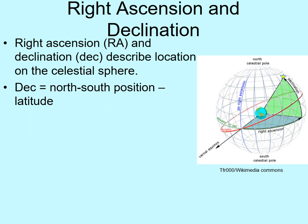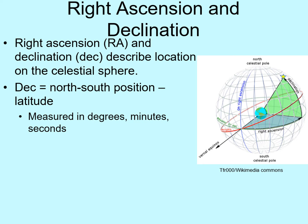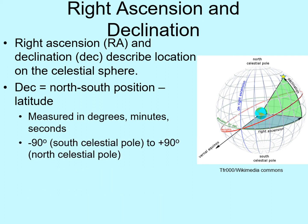Declination is like latitude on the Earth. It defines how far north or south an object appears in the sky. Just like latitude, declination is measured in degrees, minutes, and seconds of arc. However, rather than listing those angles as north and south, declination gives angles as positive and negative values. So declination runs from minus 90 degrees, which marks the south celestial pole, to plus 90 degrees, the north celestial pole. The celestial equator is at zero degrees.